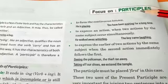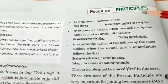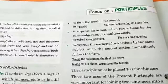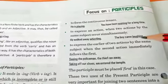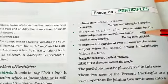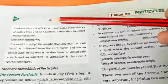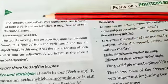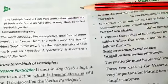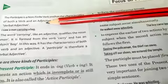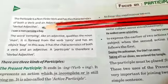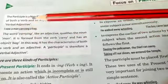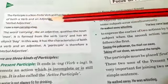Next, our topic is the third kind of non-finite verb: participles. This is the fourth video for the same topic. A participle is a non-finite verb that has the characteristics of both a verb and an adjective, so it is called a verbal adjective — it has the qualities of both verb and adjective.